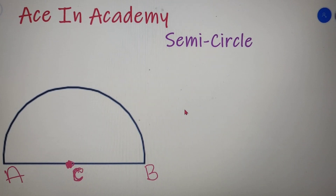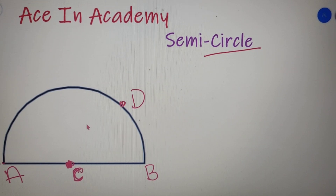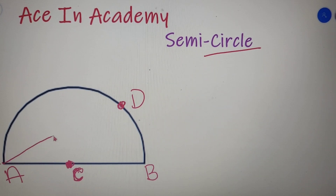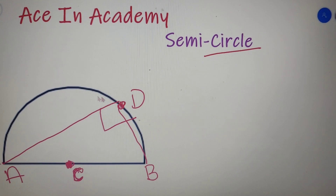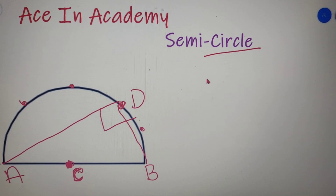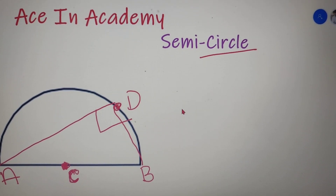There is one interesting and important theorem related to a semicircle. If I take any point that lies on the arc of the semicircle — let's say a point D — then according to the theorem, the triangle formed by the endpoints of the semicircle and that point on the boundary will always be a right angle triangle. So triangle ADB will be a right angle triangle, right-angled at point D. This is valid for any point taken anywhere on the arc of the semicircle.